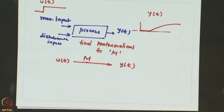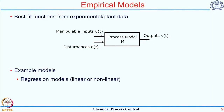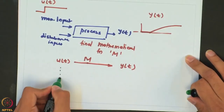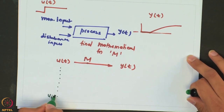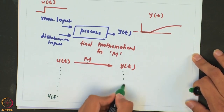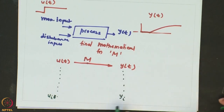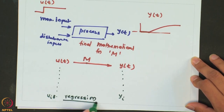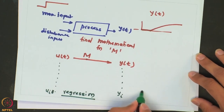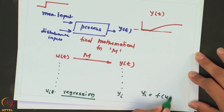There are multiple ways in which empirical models can be formulated. One is a simple regression model: we have the input data — all the values of u_i — and the output values y_i, and we simply do regression which tells me y_i as a function of u_i.